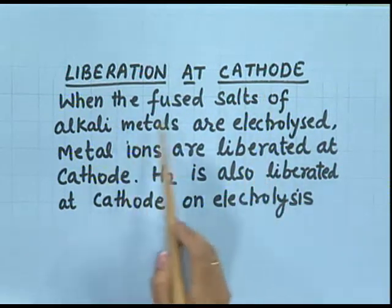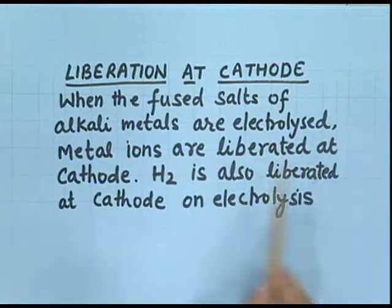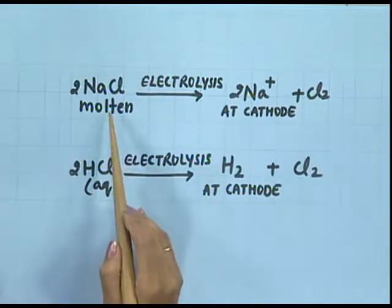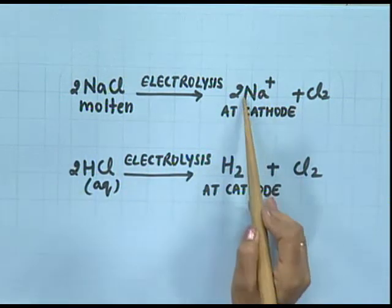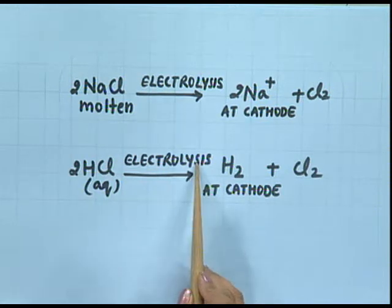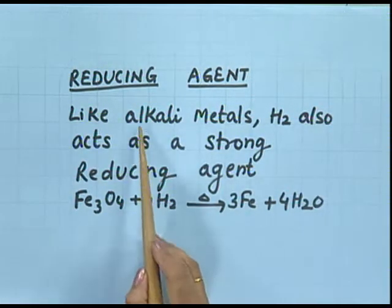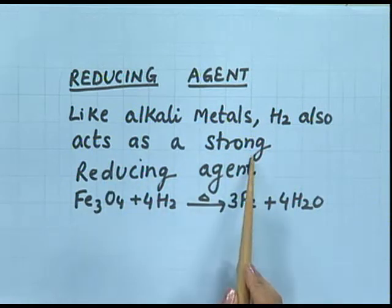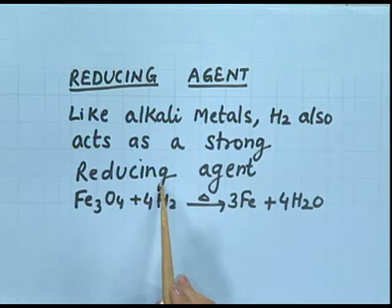Liberation at cathode: when fused salts of alkali metals are electrolyzed, metal ions are liberated at the cathode. Hydrogen is also liberated at the cathode on electrolysis. Molten sodium chloride on electrolysis produces sodium ions at the cathode. Similarly, hydrogen chloride on electrolysis produces hydrogen at the cathode. Reducing agent: just like alkali metals, hydrogen also acts as a strong reducing agent — for example, iron oxide is reduced to iron using hydrogen.